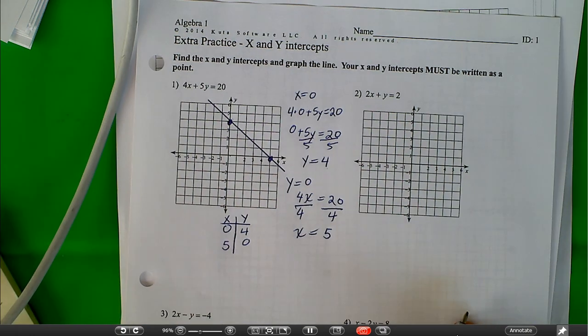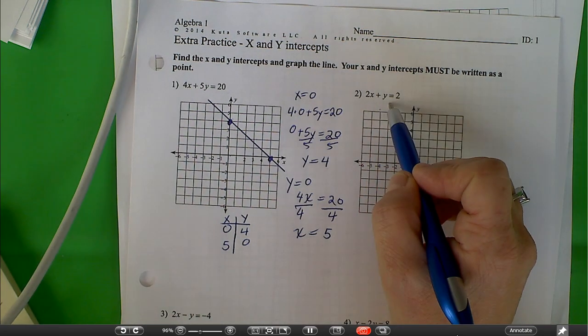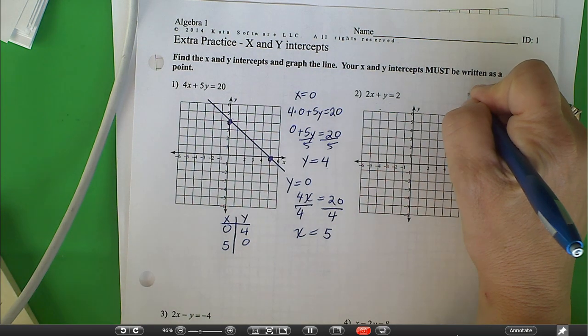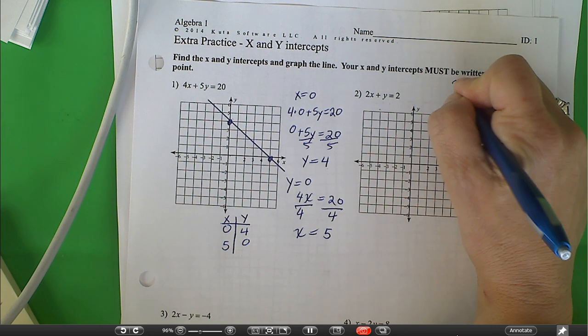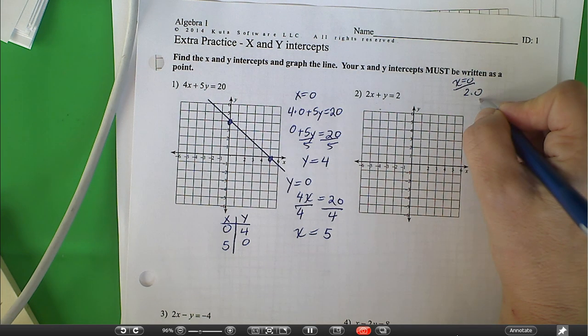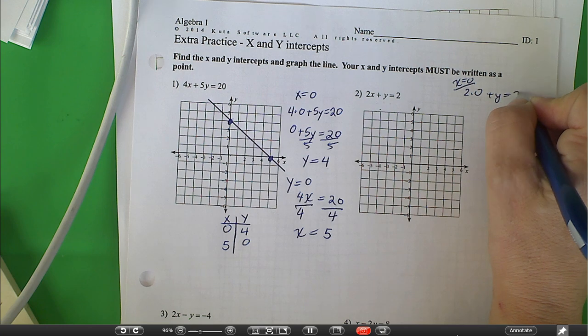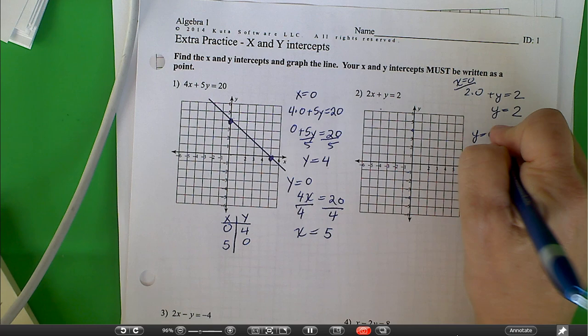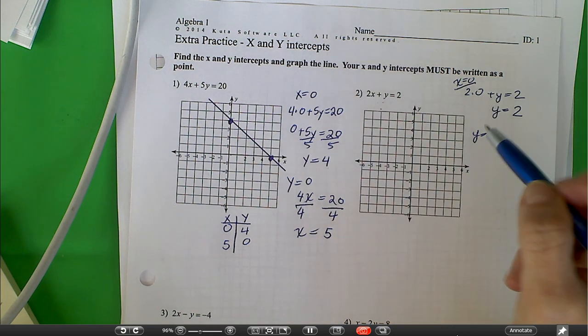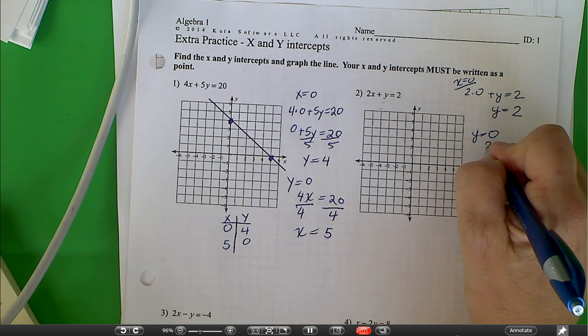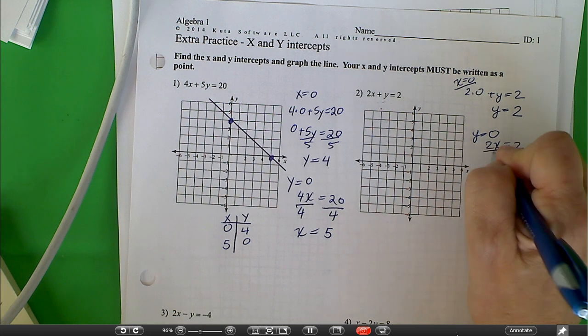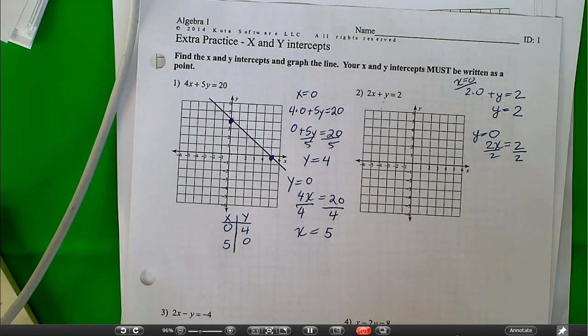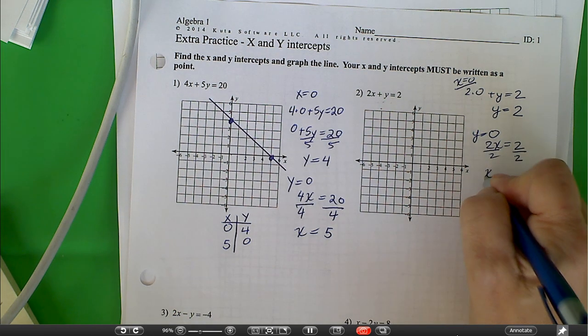We're going to do the same thing over here. We're going to do it by substitution. So I have 2 times 0. What happens when x is 0? 2 times 0 plus y is equal to 2. That means y is equal to 2. And then when y is equal to 0, y is equal to 0 means 2x is equal to 2. We're dividing both sides by 2, and I end up with x is equal to 1.